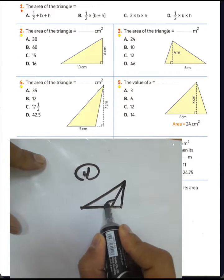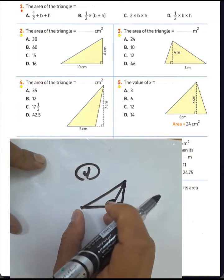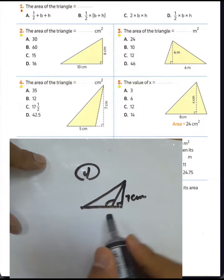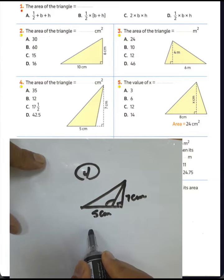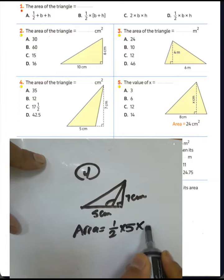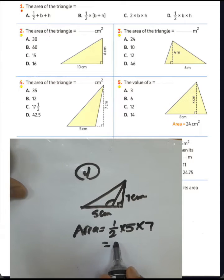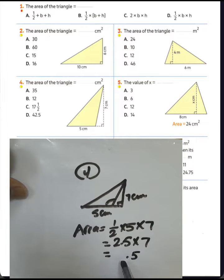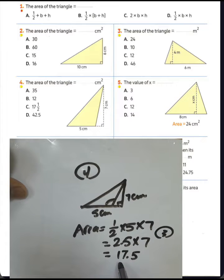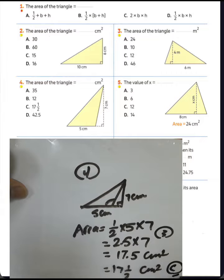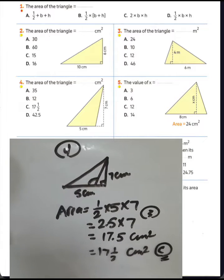Question number four: the area of the triangle. We have an obtuse triangle and the corresponding height is outside the triangle. The height was 7 centimeters and the base was 5 centimeters. The area equals half times base times height — half of 5 is 2.5, times 7 equals 17.5 square centimeters. The answer is letter C.